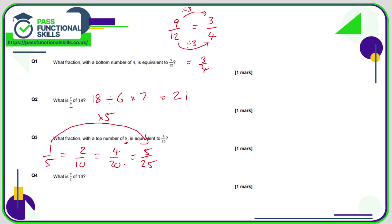Question four is very similar to question two — a fraction of an amount. We're going to take our total, divide it by the number on the bottom, and then multiply by the number on the top. 10 divided by 2 is 5, multiplied by 7 is 35.